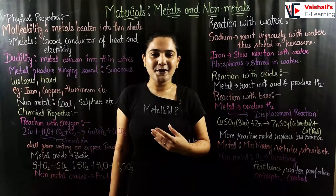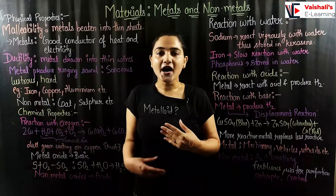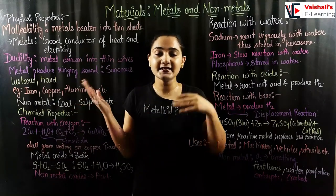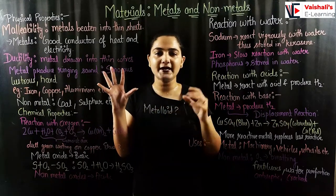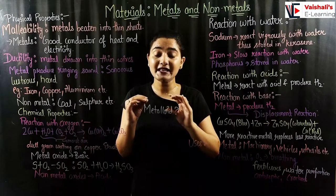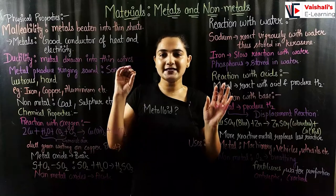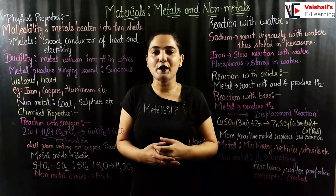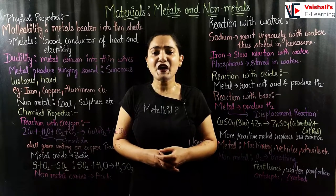Metalloids are materials that have properties of both metals and non-metals. They fall in between metals and non-metals — we cannot completely call them metals or non-metals, as some of their properties are metallic and the rest are non-metallic.